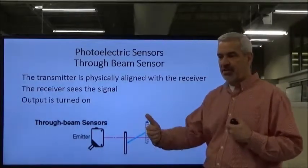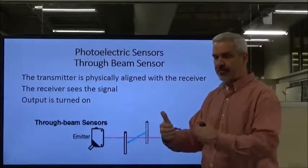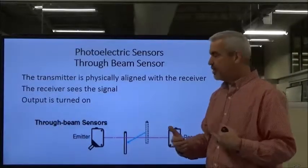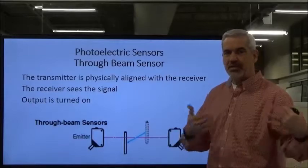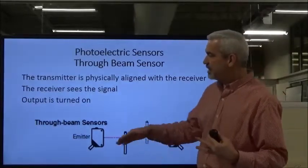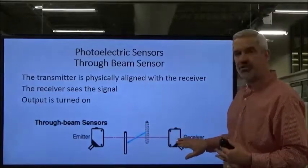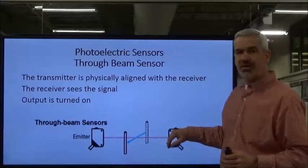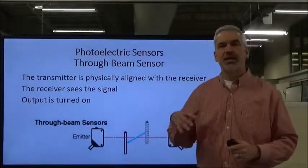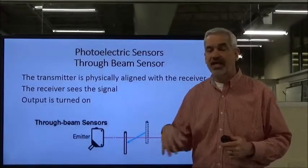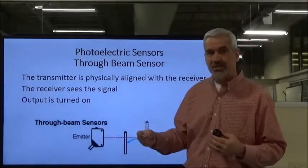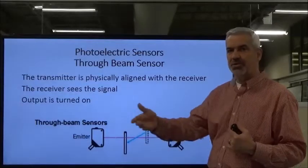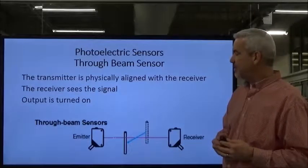If we break the through-beam, the receiver no longer sees the signal, and that's when it changes the state of our control relay logic contacts. For example, with a machine track or rail, if something breaks the photo-eye, it becomes part of the system's control. The emitter sends the signal to the receiver, and everything is fine until we break that beam — and these are not hard contacts, it's the circuitry.